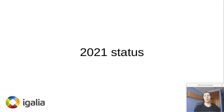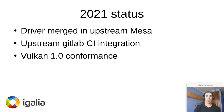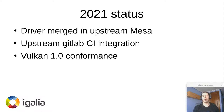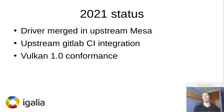Fast forward one year to present day. We merged the driver into upstream Mesa and have been developing there ever since. Another thing we did is integrate our internal CI with the Mesa GitLab CI, which has been very nice for both the OpenGL and the Vulkan drivers — not only because it makes regression checking and preventing regressions a lot easier, but also because it makes it easier for external contributors to test their patches before sending them for review.